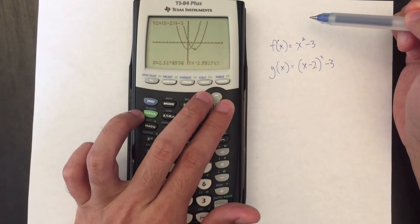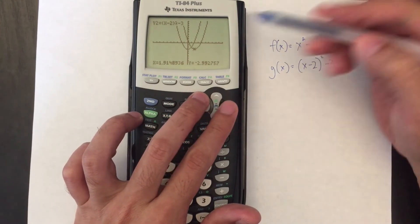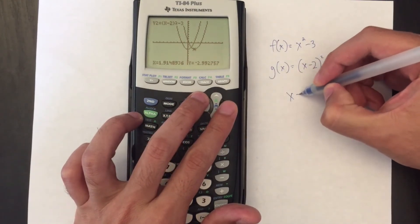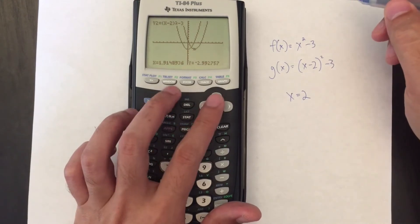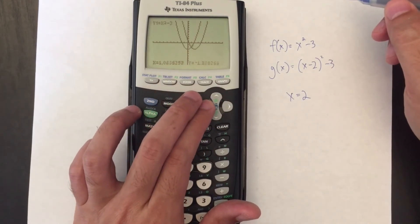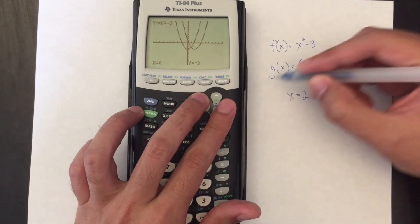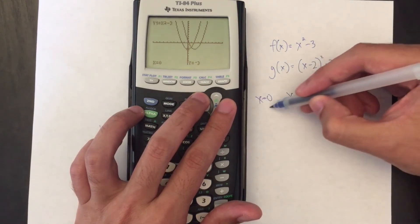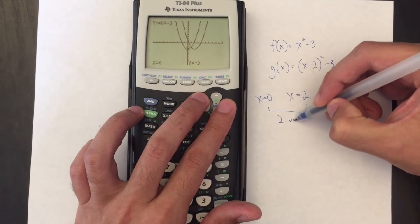So if I look at the vertex, it's about x = 2, and if I want to go to f(x), the vertex is around x = 0, and of course that is a translation of two units.